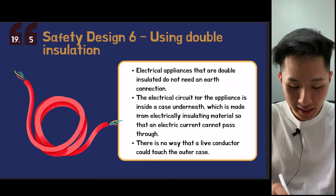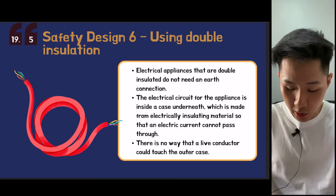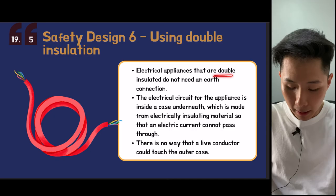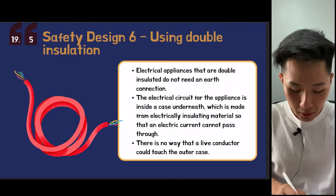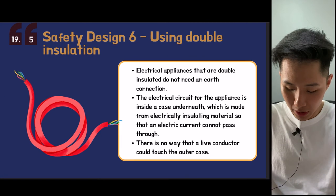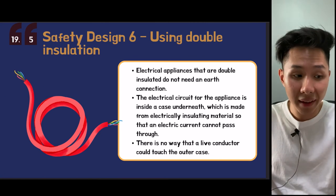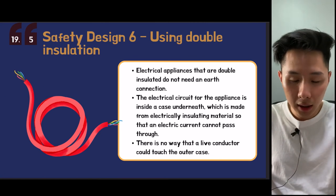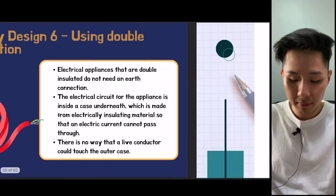The last safety design is double insulation. Appliances with double insulation don't need an earth wire — the wire is insulated twice to ensure there's no way to accidentally contact the electricity.